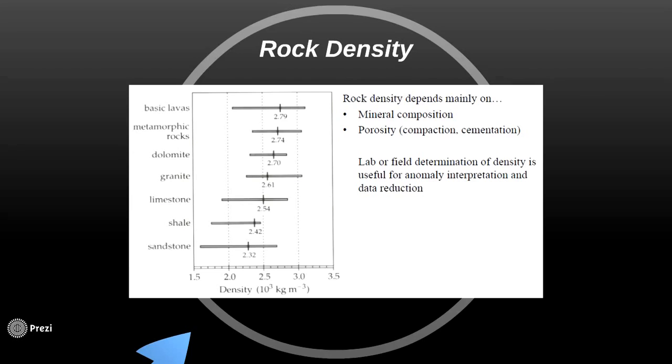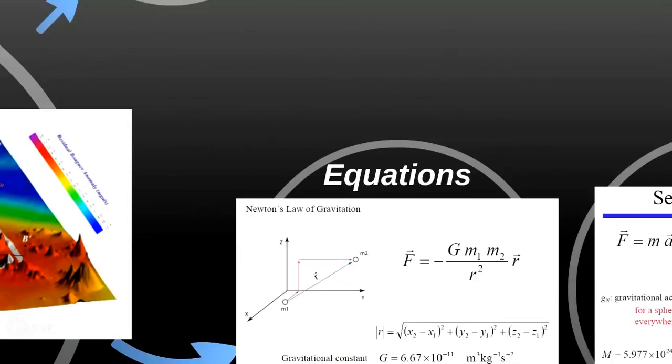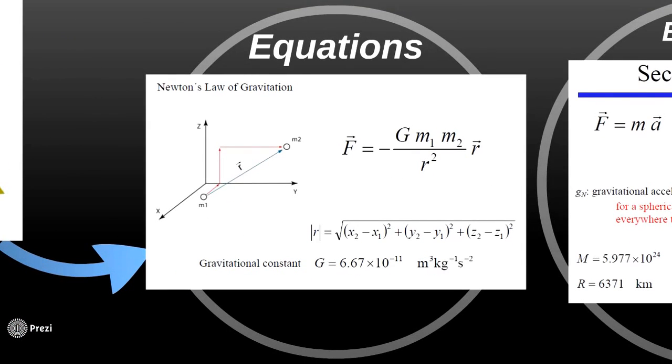Even a small change in the rock density gives a high gravity anomaly. The rock density depends mainly on the mineral composition, porosity, and the compaction and cementation.